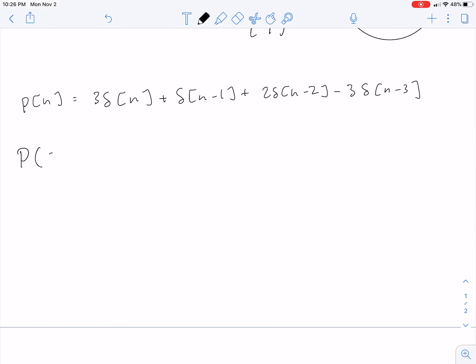So at omega equals zero, this is just the sum of P of n, which is 3 plus 1 plus 2 minus 3, all of these magnitudes here, all of these coefficients. This equals 3.